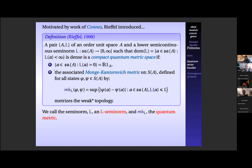Question: what would happen if in this definition you took not just self-adjoints but the wider class of elements? You could define it on all of the unital C*-algebra, but in that case you'd want to add other conditions — for example, you would want L to be star-invariant: L(a*) = L(a). Thank you.